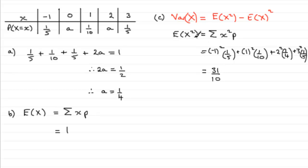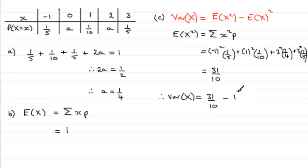So putting our ideas together, the variance of the random variable X equals E(X²), which is 31 over 10, minus E(X) squared, which is 1 squared — still comes to 1. So 31 tenths take away one whole one leaves you with 21 over 10. And there's your answer for part C.